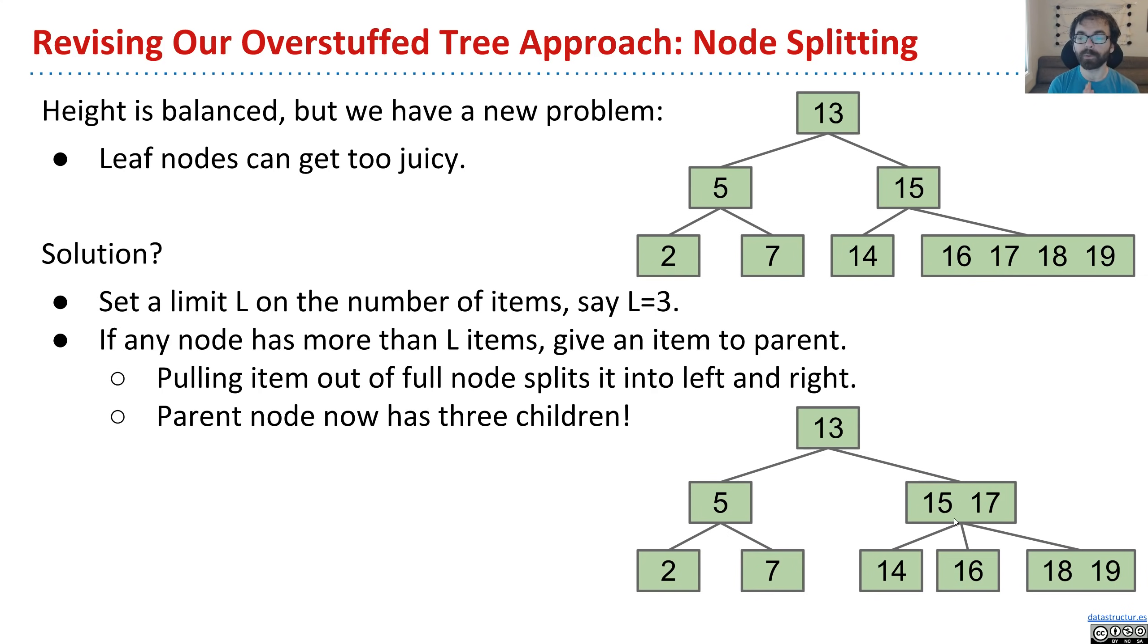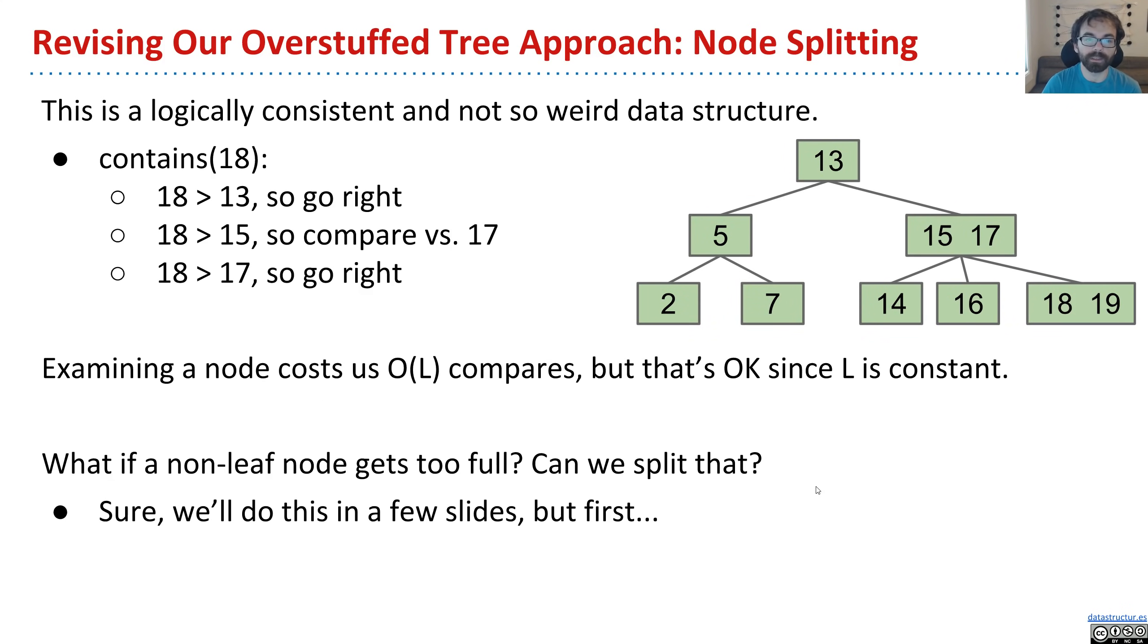And actually, if you look at this, there's a really neat feature, which is that here's 15 and 17. These are the items that are less than 15 and 17. The middle item is everything that's between 15 and 17. And the right is everything greater than both 15 and 17. And so we end up with the node that has three children, but that's fine. And that's basically what the B-tree is all about.